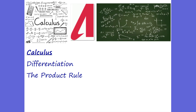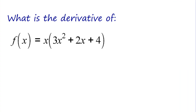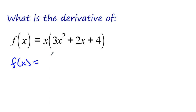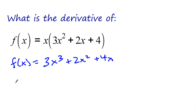We've been doing the power rule, and you've gotten really good at doing the power rule. Now we're going to go to the product rule, because we can do derivatives like this. We've done derivatives like this before, where we take this function and we distribute this x to everything, and we get 3x cubed plus 2x squared plus 4x. And now we can do the derivative and use the power rule.